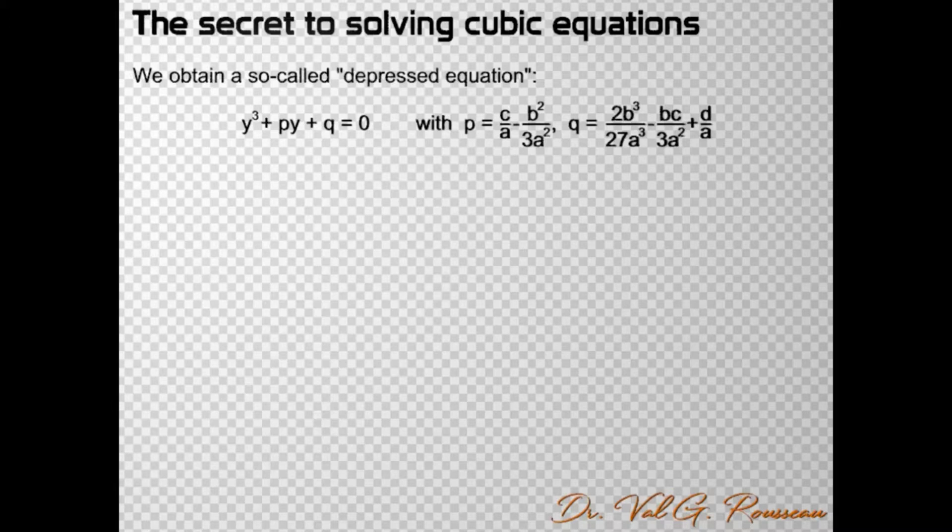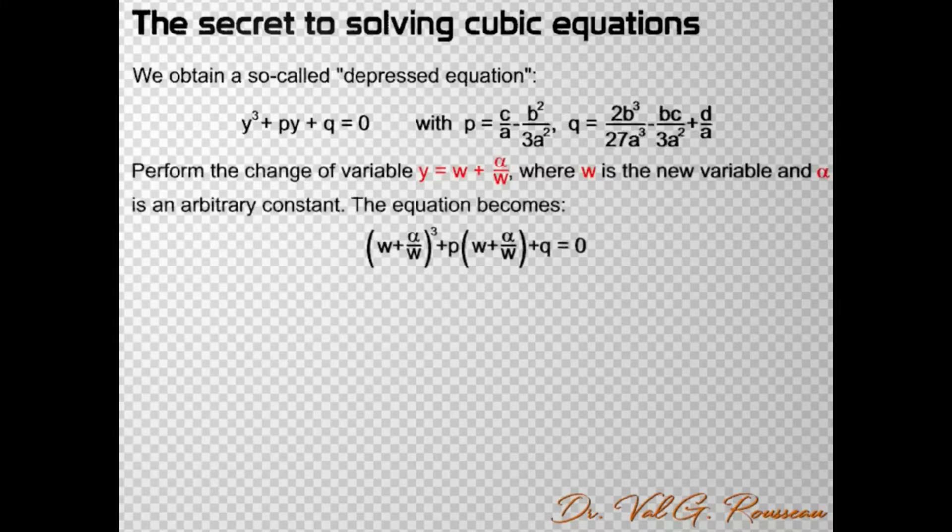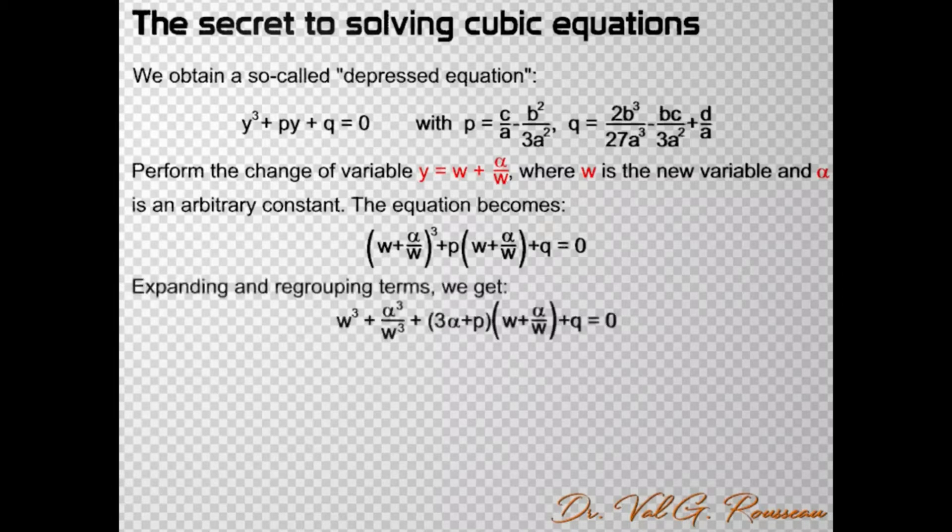Instead, we can try to add a constant divided by the new variable. So, here we substitute y = w + α/w and get a new expression. Like before, we can expand and group terms, leading to a new expression that simplifies greatly if we choose for the arbitrary constant the value α = -p/3.